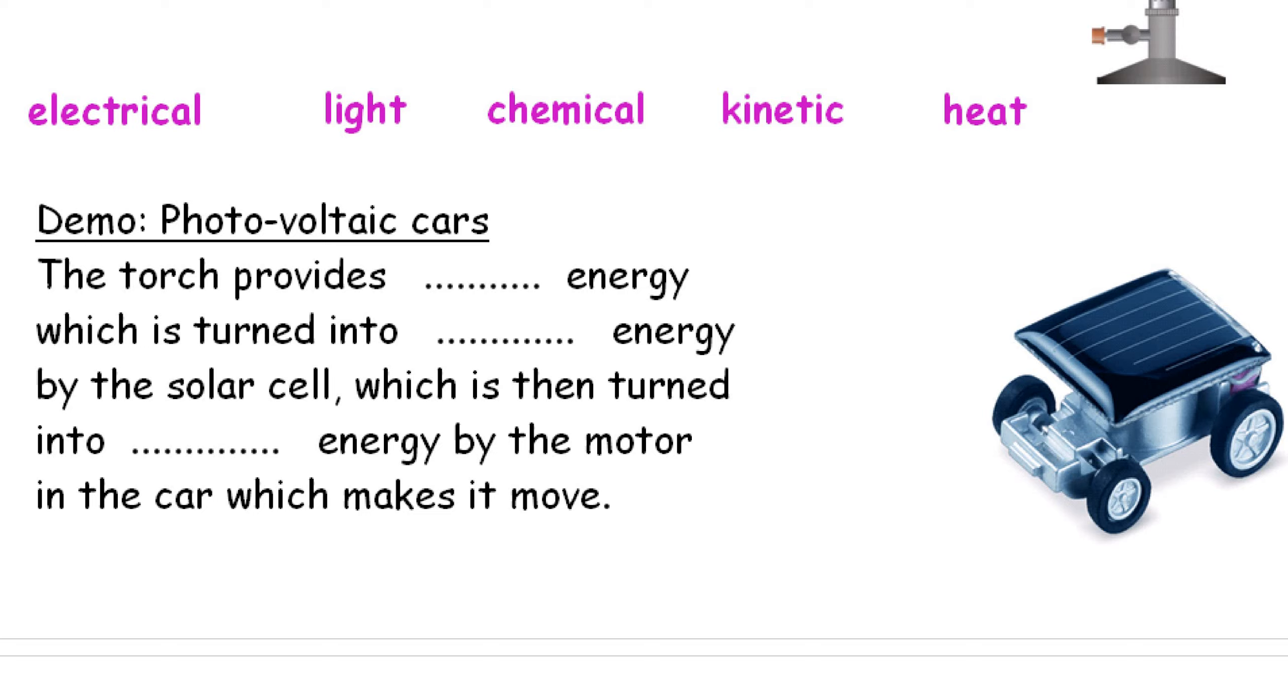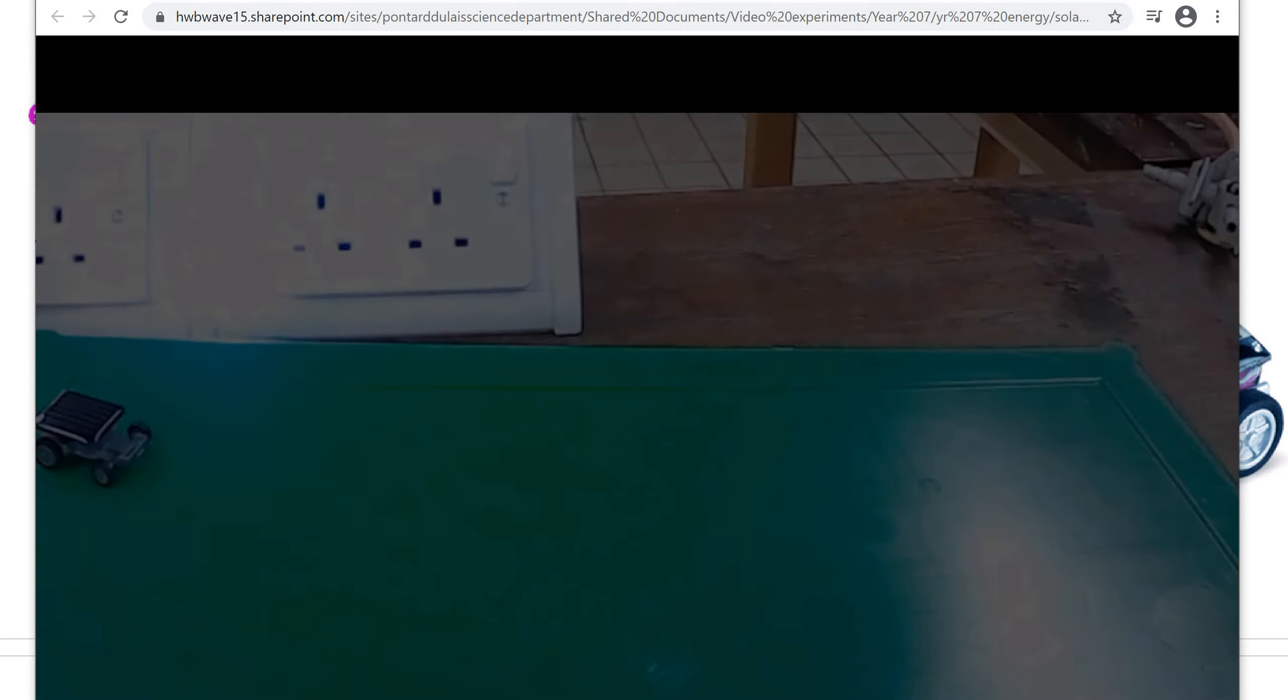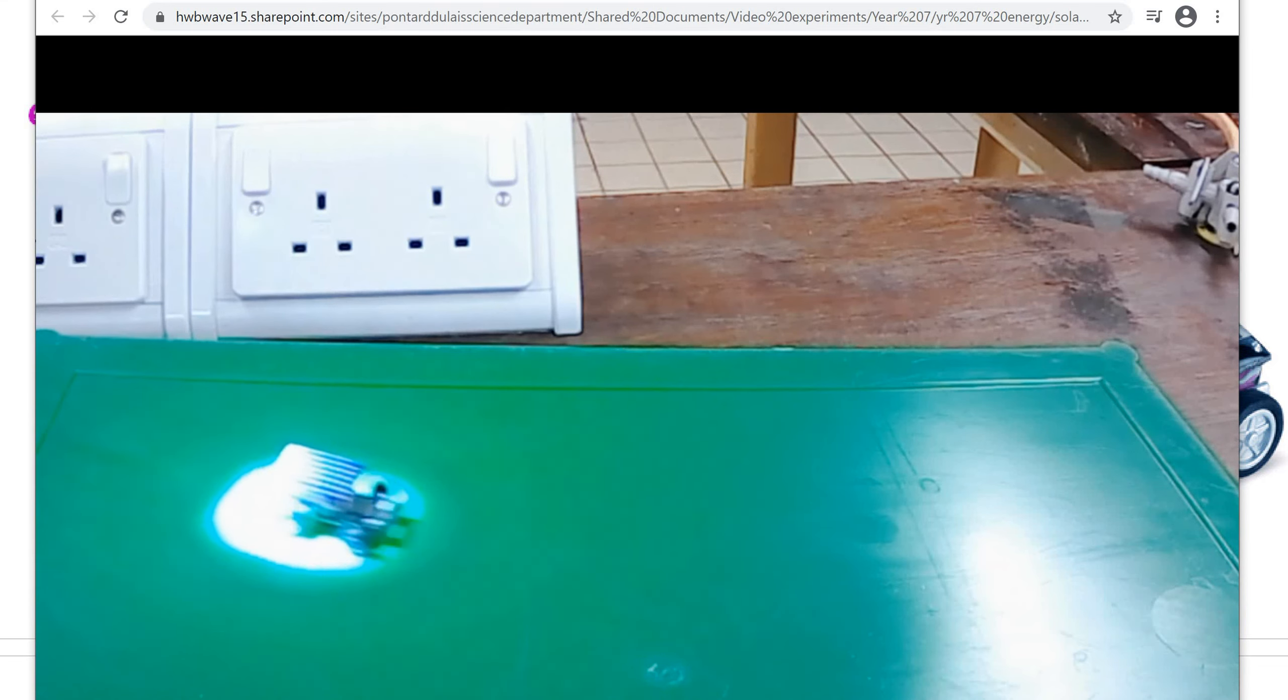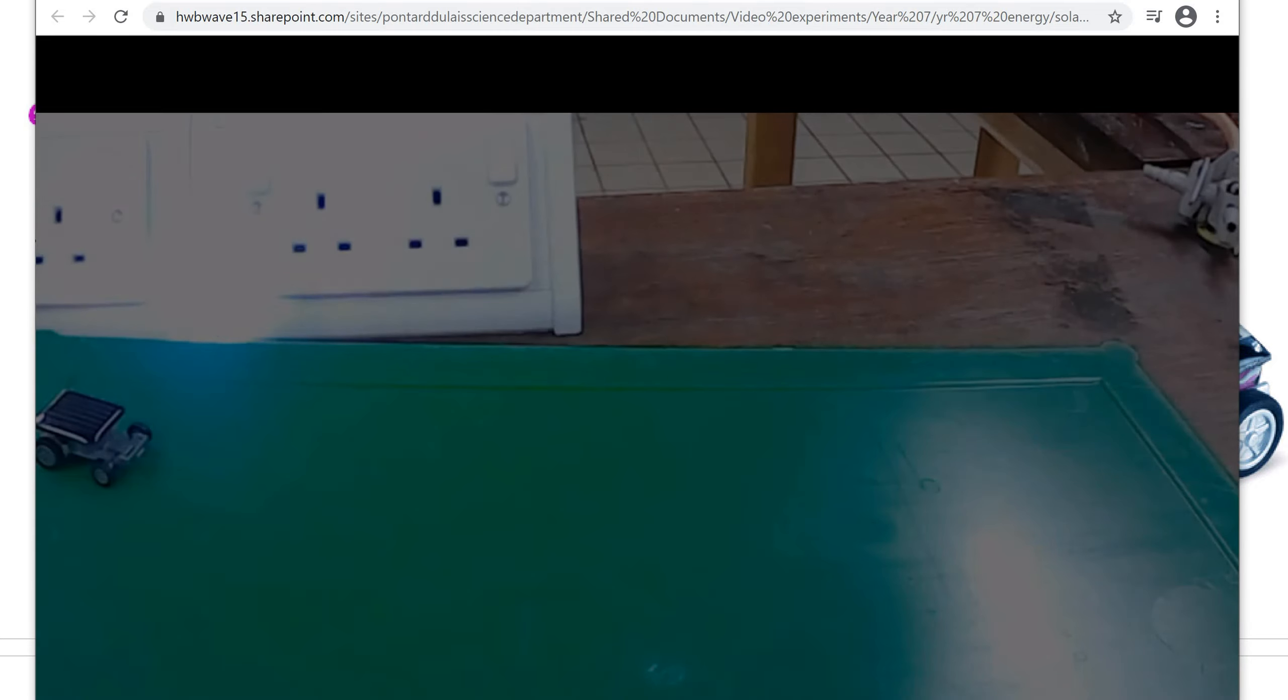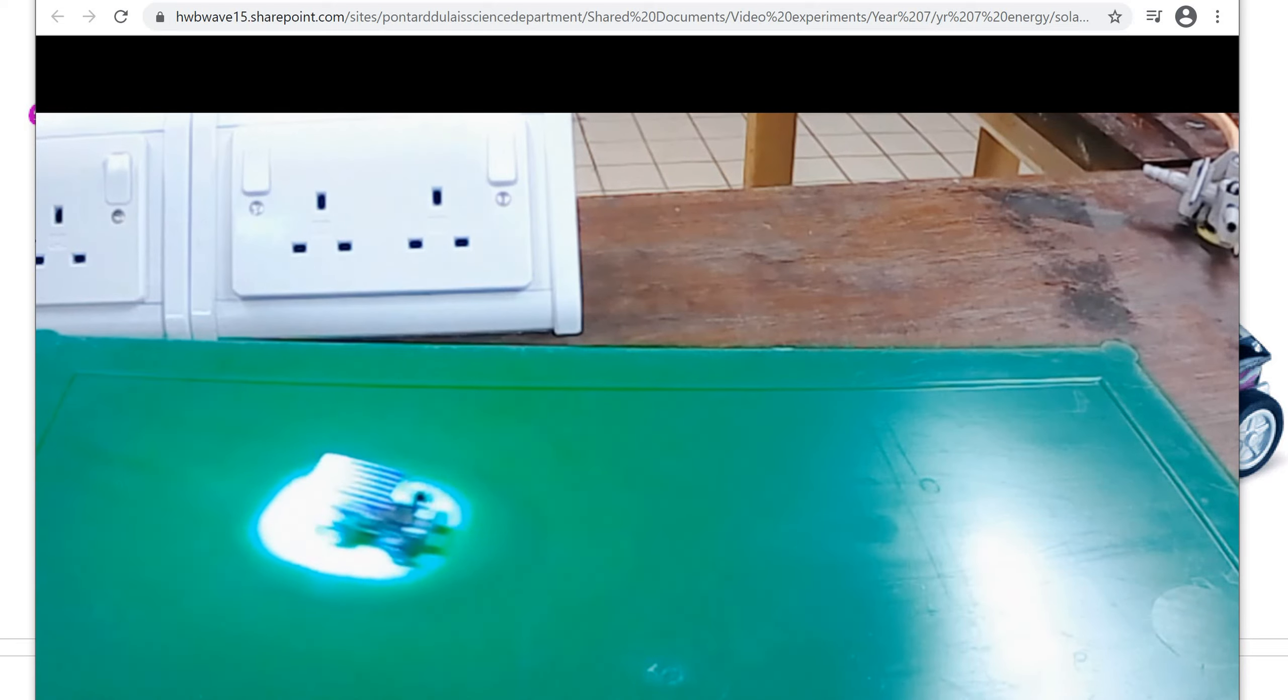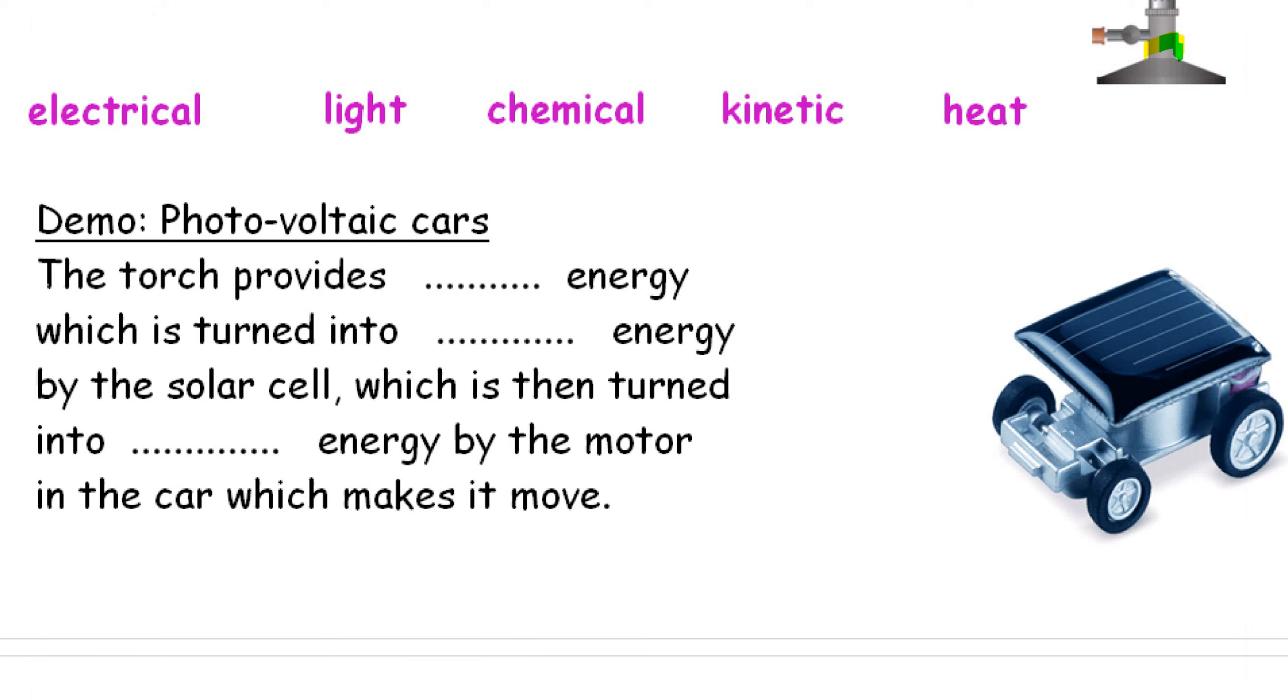Let's have a look at a quick video on the photovoltaic car. The torch provides light energy, which is turned into electrical energy by the solar cell, which is then turned into kinetic energy by the motor in the car, which makes it move.